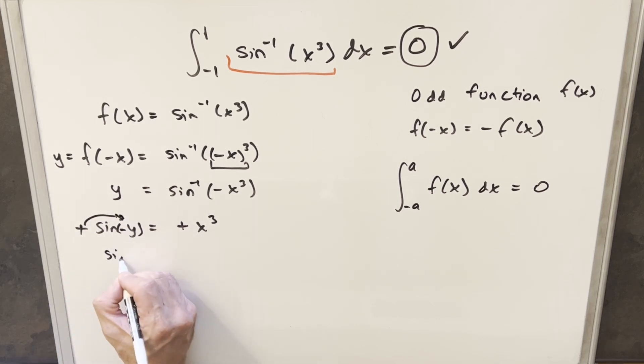So then just to make it really clear, we notice that we have sine of minus y equal to x cubed. But now we can take the arcsine on both sides. So then on the left side, we're going to have minus y. And on the right side, we're going to have arcsine of x cubed.